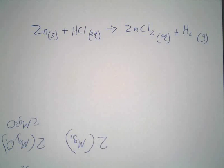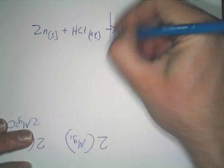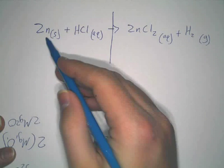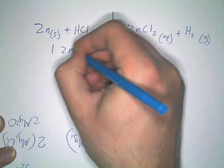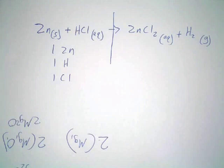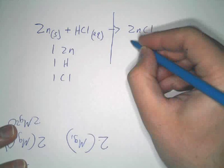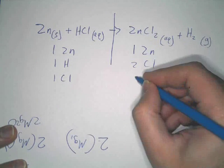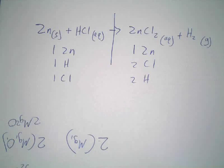So, there's our reaction now. Let's just, again, you make your dividing line, you figure out what you got. So, on the left side, how many zincs? One zinc, one hydrogen, one chlorine, right? Everybody agree?